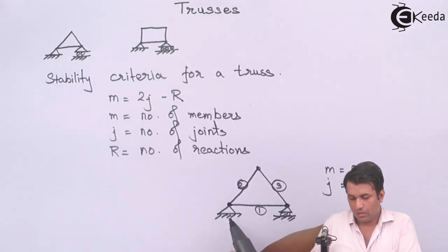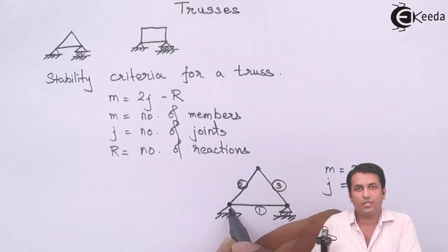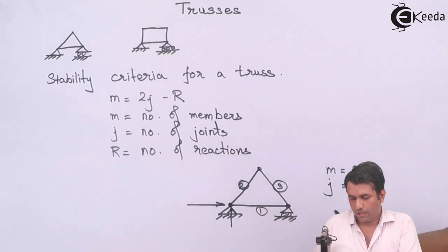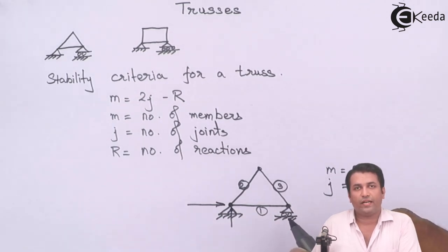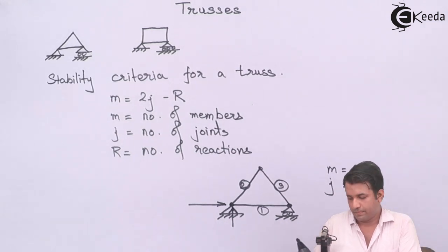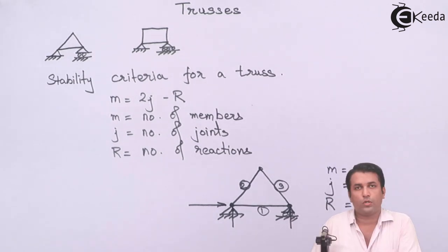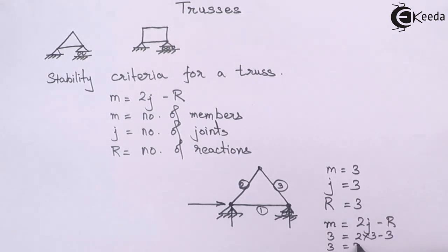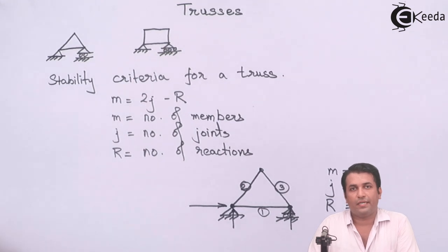Reactions: For the hinge support, we have two reactions along the X direction and along the Y direction. For the roller support, we have only one reaction perpendicular to the surface in the Y direction. So the total number of reactions I have is 3. I will put up these values in the equation. This shows that it is a stable truss because my left hand side and right hand side are equal.